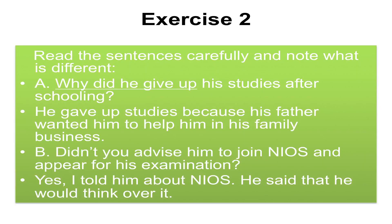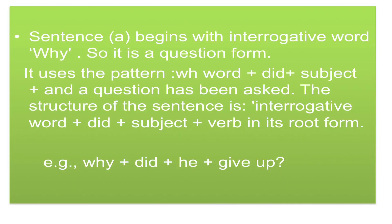The exercise asks you to read the sentences carefully and note what is different. Sentence 1: Why did he give up his studies after schooling? Sentence 2: He gave up studies because his father wanted him to help in his family business. Sentence 3: Didn't you advise him to join NIOS and appear for his examination? Sentence 4: Yes, I told him about NIOS. He said that he would think over it. Sentence 1 begins with the interrogative word 'why', so it is a question form using the pattern: WH word + did + subject + verb. The structure is: why + did + he + give up.